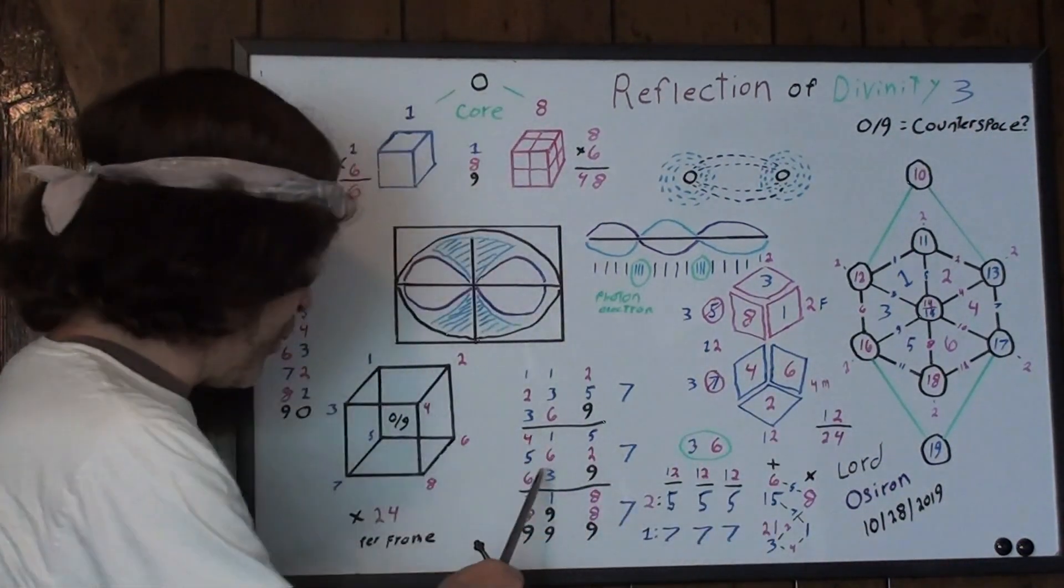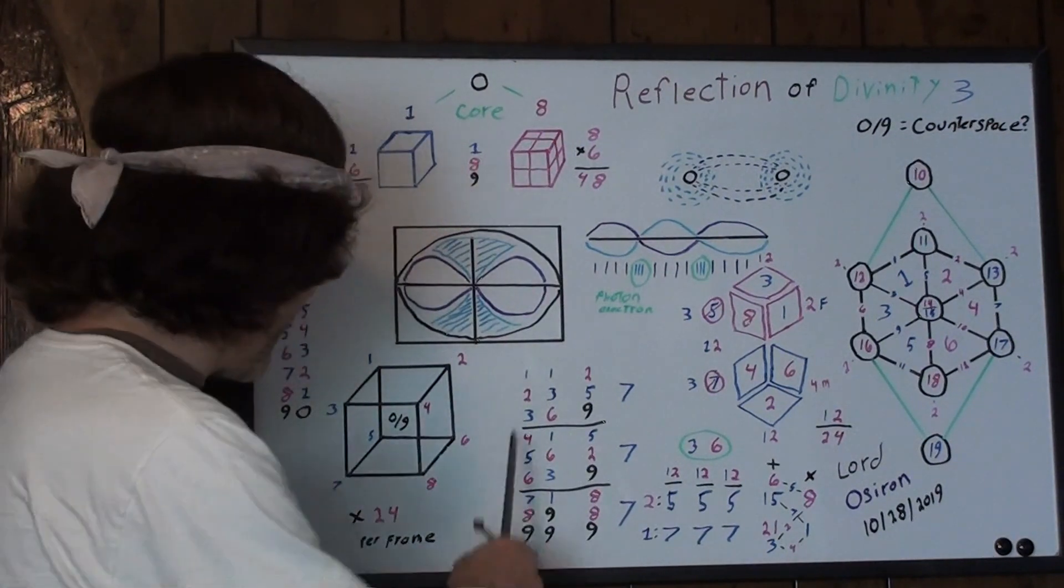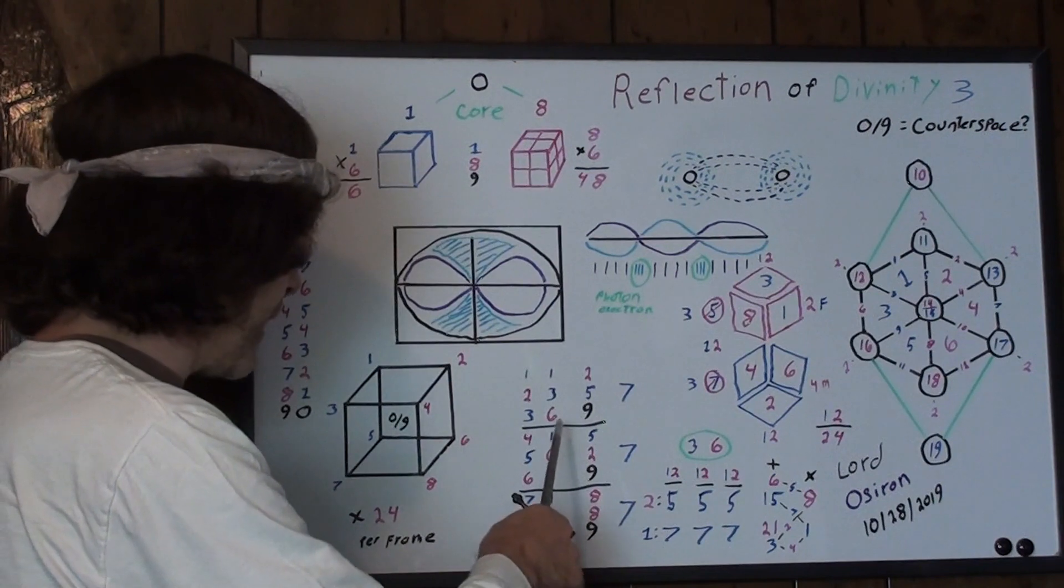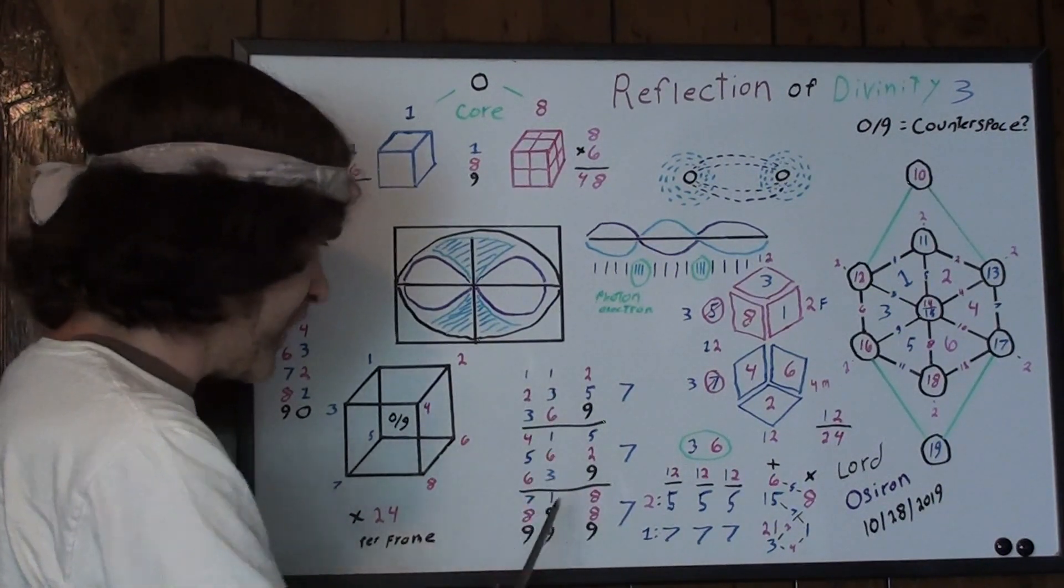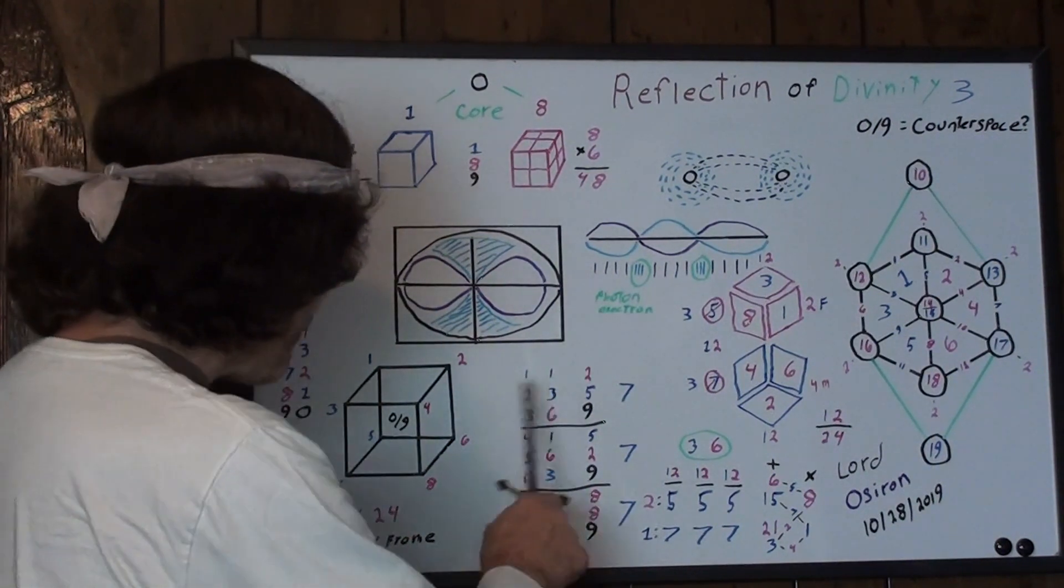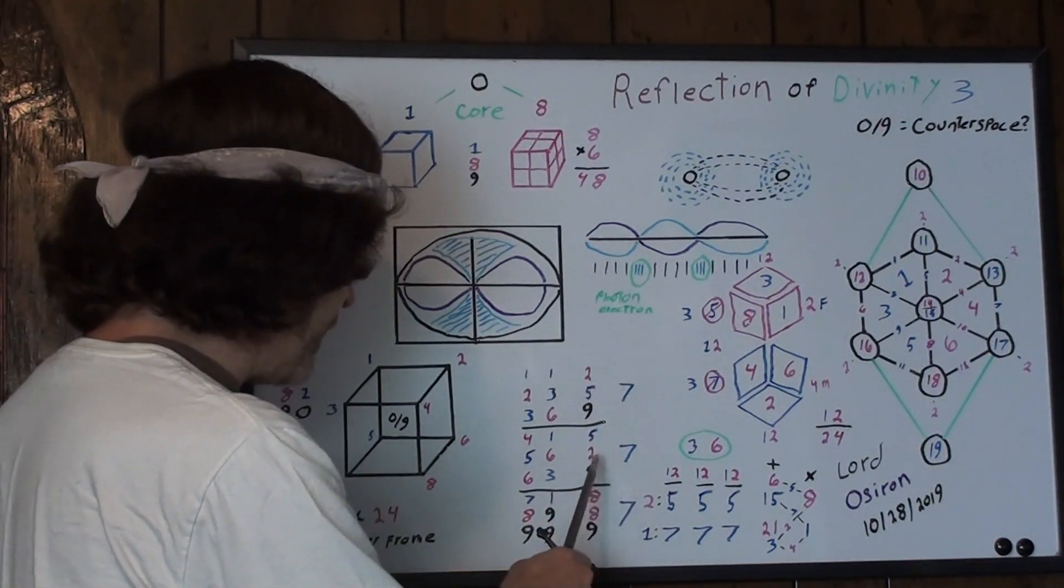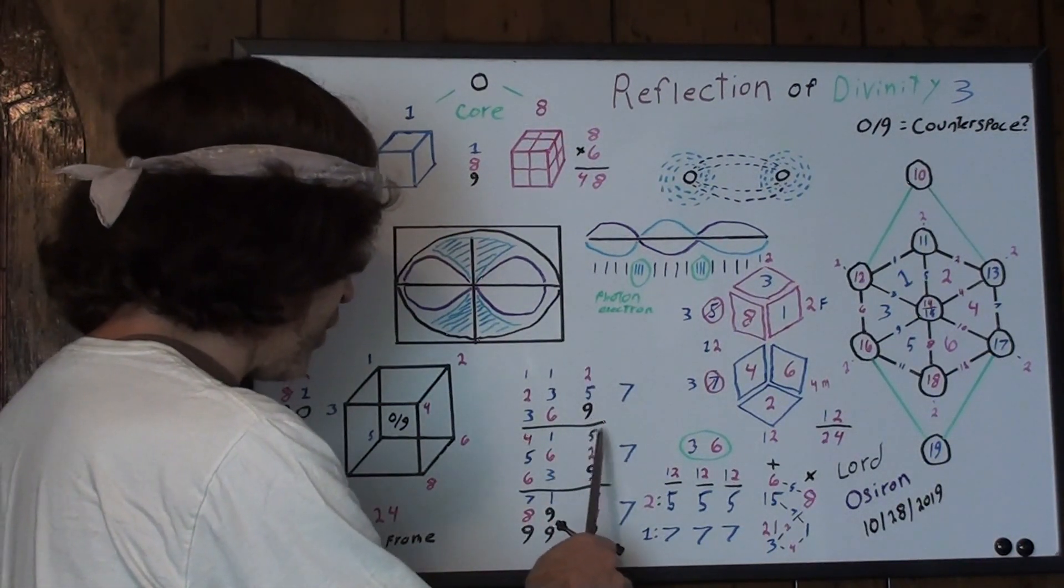So over here is the code that the single digit code reveals. You got the organic string of numbers, one through nine, and then you got the code next to it that's one three six, one six three, and then one nine nine. Okay, now when you add those together it reveals two five, then nine, and then five two, then nine. Another equally symmetrical number system.